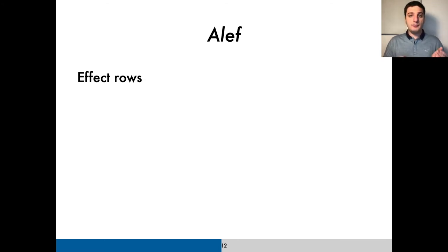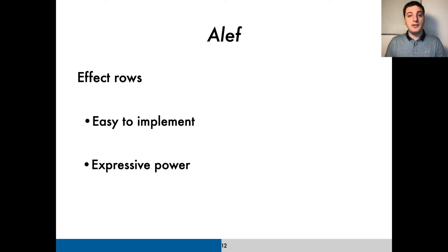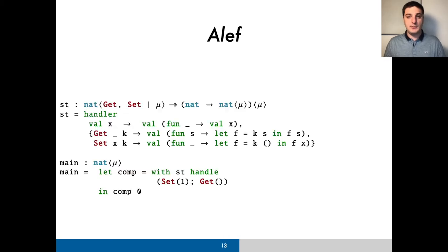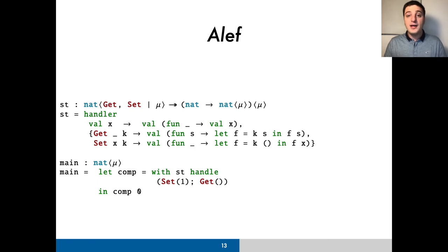We use this kind of effect rows mainly for two reasons. The first one is that they are very easy to implement, and the second one is because of their expressive power, which is added by the effect variables. Notice how all three effect variables in the state handler's type are equal. Particularly, the one associated with the resulting function's type must be equal to the one present in the handler's domain. This is because the resulting function may invoke operations that weren't handled by the handler.